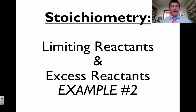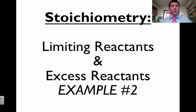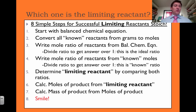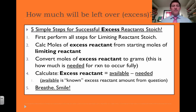This is my second example of limiting reactant and excess reactants in stoichiometry. If you haven't watched the first video, I would highly recommend it because in that video I explained what a limiting and excess reactant is. This one I'm just going to go over one more example. In the last video I also went through the eight simple steps a little more clearly. This is how I do limiting reactant, and when we get to excess reactant, these are the five simple steps that I use.